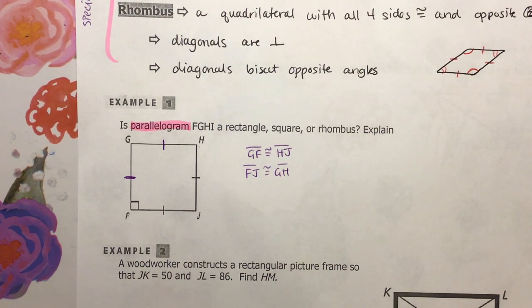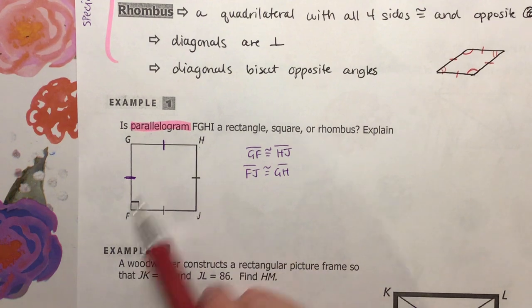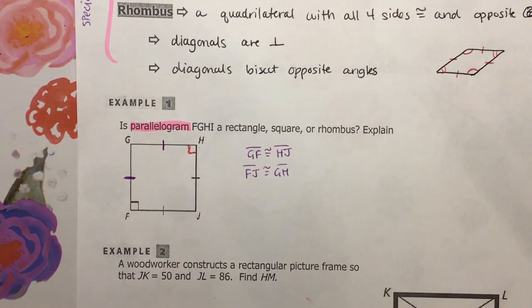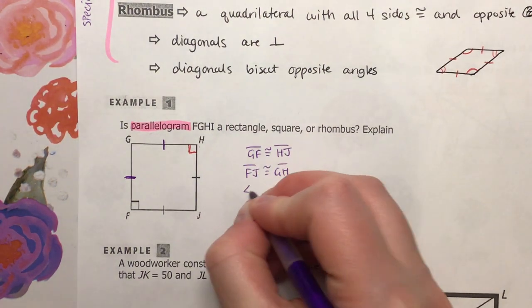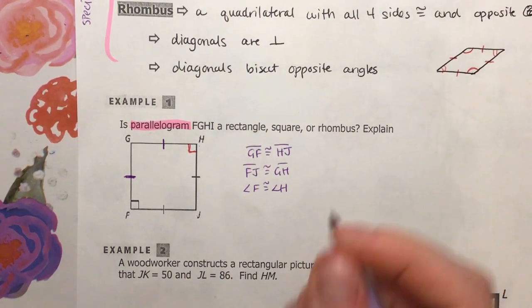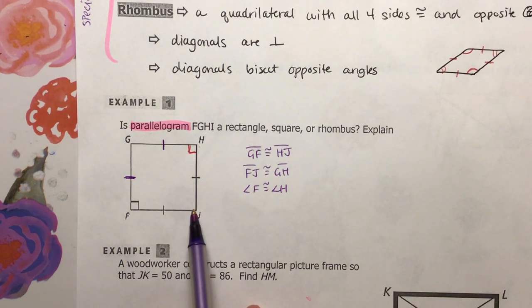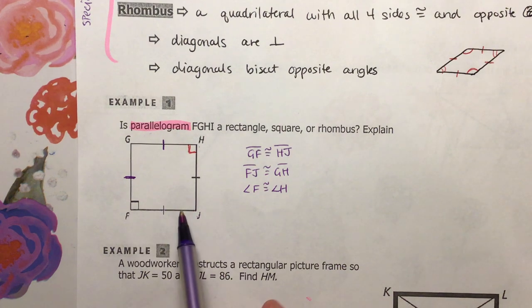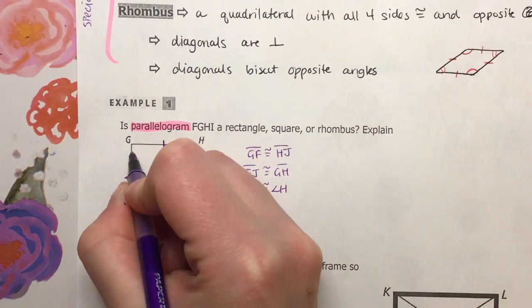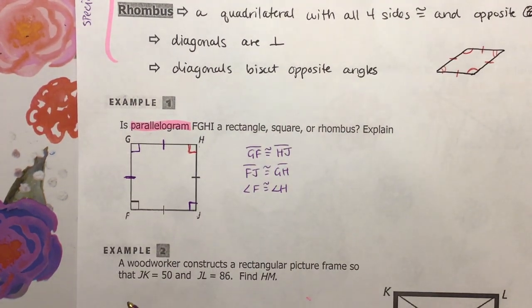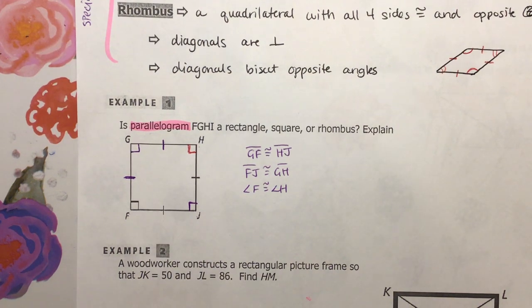I also know that opposite angles in a parallelogram are congruent. So F is opposite from H, which means they both have to be 90 degrees. Angle F is congruent to angle H. And then F plus J has to equal 180 because these are consecutive angles. If they have to equal 180, J also has to be 90 degrees and G also has to be 90 degrees. So at this point, we have a shape that has four congruent sides and four congruent angles.